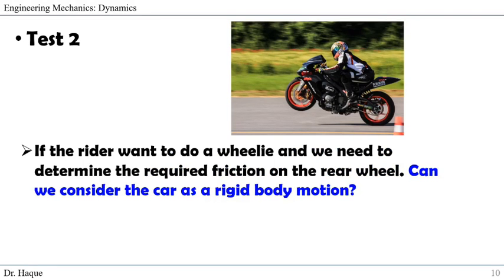Let's do another test. If we see the image, the rider wants to do a wheelie — taking the front wheel up. We need to determine the required friction on the rear wheel. Can we consider the bike as a rigid body motion? You can pause the video and come up with your answer to compare with the correct one.